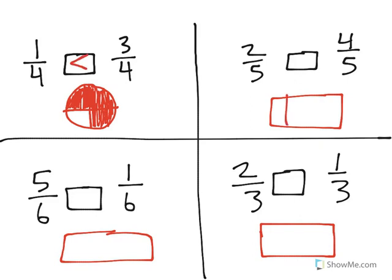2/5 and 4/5 is the next one. Let's start by shading in 2/5 here. Now, if we shade in 4/5, that would be 4 out of the 5 equal pieces. And as you can see, that represents a greater amount.